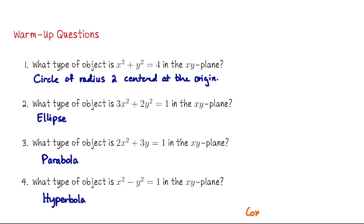The first one is a circle of radius 2 centered at the origin. The next one is an ellipse. 2x squared plus 3y equals 1 is a parabola. And lastly, x squared minus y squared equals 1 is a hyperbola. These are what we call conic sections. If you're rusty on conic sections, you might want to pause this video and spend a few minutes reviewing them, because we will use this information to graph quadric surfaces. I'm going to assume that you're familiar with circles, ellipses, parabolas, and hyperbolas.